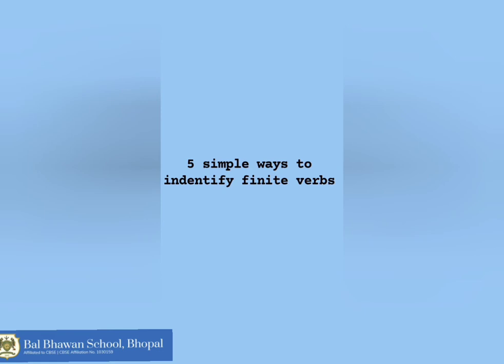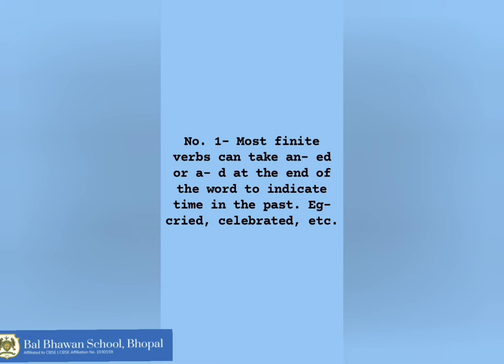How will you identify finite verbs? Here are five simple ways to identify finite verbs. Number one: most finite verbs can take an -ed or -d at the end of the word to indicate time in the past, that is the past tense. For example: cuff → cuffed, celebrate → celebrated.